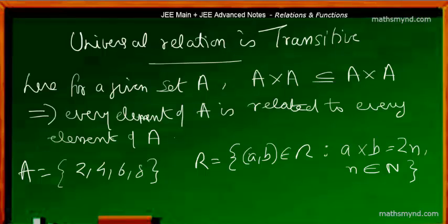Let us look at a simple example to understand how a universal relation becomes transitive. Suppose a given set contains elements {2, 4, 6, 8}. In this case, a common property is used to link up the elements — the ordered pair (a,b) is an element of the relation such that the property is that a×b, when you multiply any two elements of the given set A, should give an even natural number 2n, where n is an element of the set of natural numbers ℕ. When we multiply any two even numbers, the result is naturally an even number.